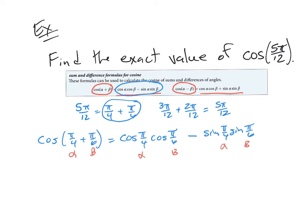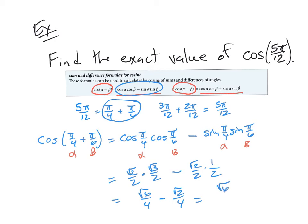Using our unit circle: cosine of pi over 4 is root 2 over 2, cosine of pi over 6 is root 3 over 2. Then minus sine of pi over 4, which is root 2 over 2, times sine of pi over 6, which is 1 half. That gives root 6 over 4 minus root 2 over 4 — the same answer as sine of pi over 12. It's a coincidence, but the cosine of 5 pi over 12 equals the sine of pi over 12.